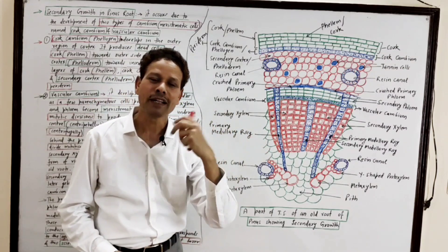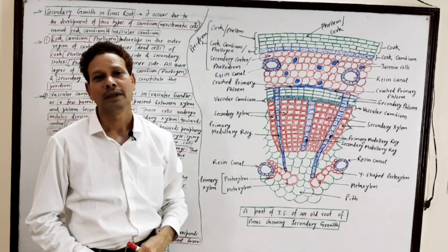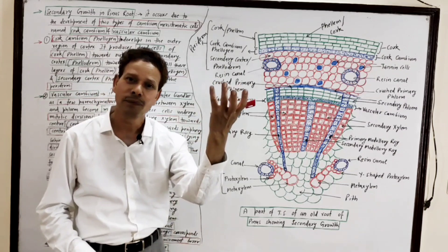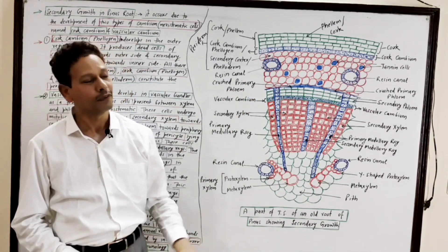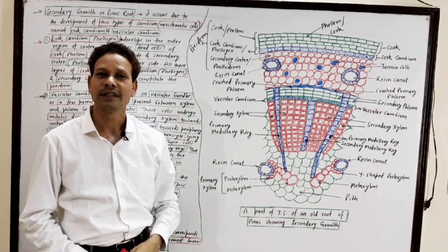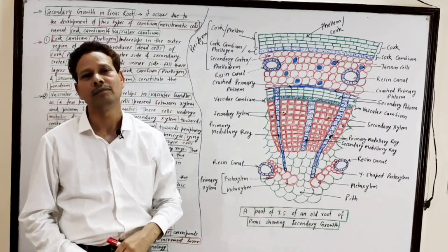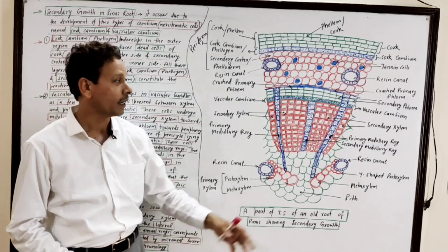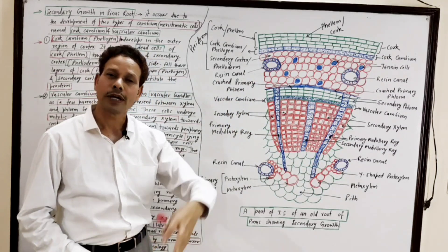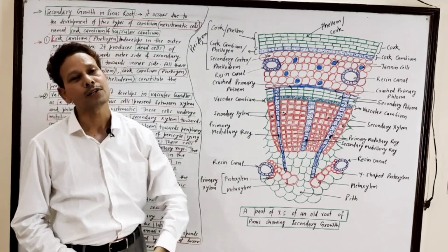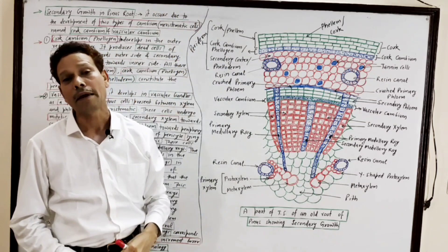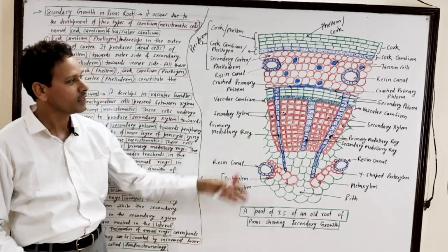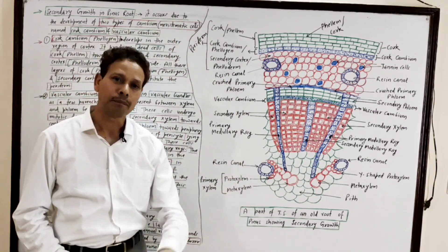The growth rings may be counted by a special instrument called an increment borer. This scientific study of analyzing growth rings helps in counting the age of a particular root and studying different environmental conditions of a particular time period — that study is dendrochronology. This concludes the topic of secondary growth in Pinus root.